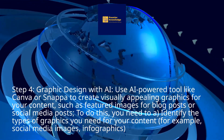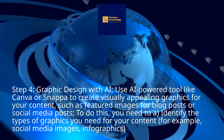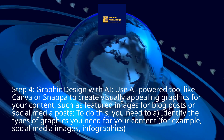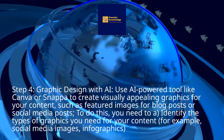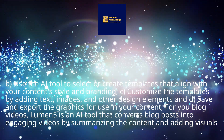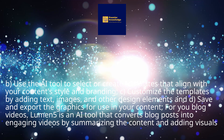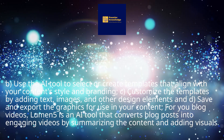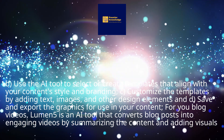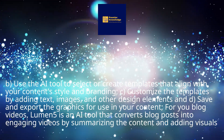Step 4: Graphic design with AI. Use AI-powered tools like Canva or Snappa to create visually appealing graphics for your content, such as featured images for blog posts or social media posts. To do this: a) identify the types of graphics you need, for example social media images and infographics; b) use the AI tool to select or create templates that align with your content style and branding; c) customize the templates by adding text, images, and other design elements; and d) save and export the graphics for use in your content. For your blog videos, Lumen5 is an AI tool that converts blog posts into engaging videos by summarizing the content and adding visuals.